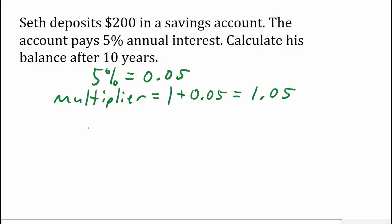He begins with $200. And he repeatedly multiplies by 1.05. We want his balance after 10 years, so he's going to multiply by 1.05 ten times. So here's an equation to figure out his balance after 10 years: 200 times 1.05 to the 10th power.